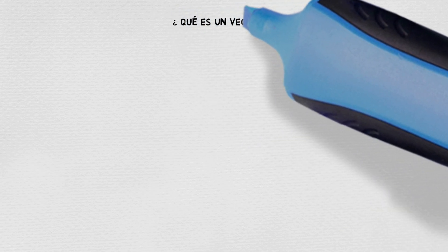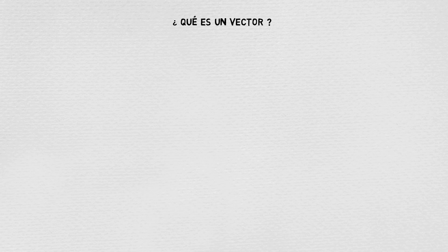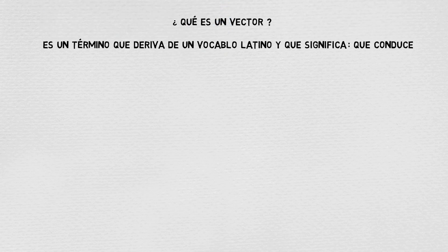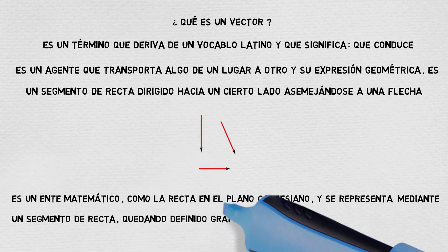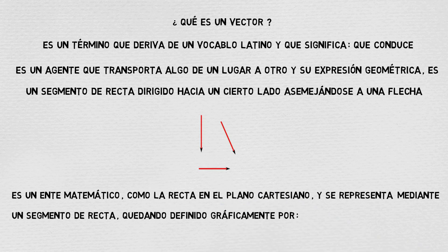Now we can introduce what vectors are. What is a vector? It is a term derived from a Latin word meaning 'one that is driving.' It is an agent that transports something from one place to another, and its geometric expression is a directed segment towards a certain side, like an arrow. It is also a mathematical entity represented in the Cartesian plane through a directed path, which is defined graphically.